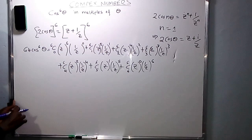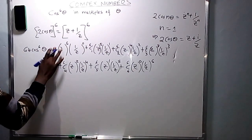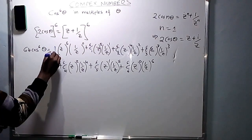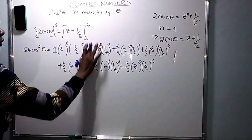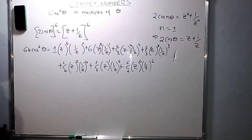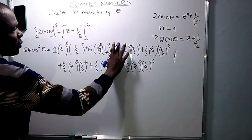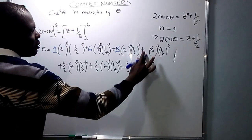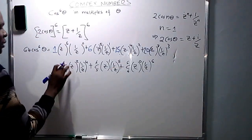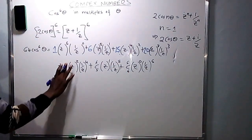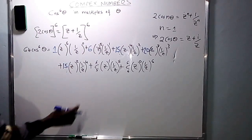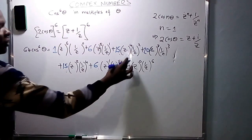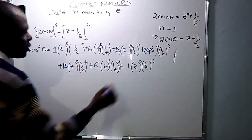Put the coefficients: 6 combination 0 is 1, 6 combination 1 is 6, 6 combination 2 is 15, 6 combination 3 is 20, 6 combination 4 is 15, 6 combination 5 is 6, 6 combination 6 is 1. Then we start simplifying.